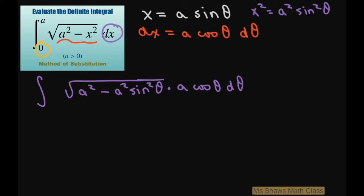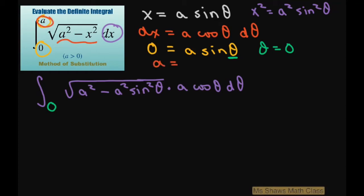Now we have to change our upper and lower limits. When X is zero, we have zero equals A sine of theta, which means theta equals zero, so the lower limit stays the same. When X equals A, we have A equals A sine of theta, so sine of theta equals one, which means theta equals pi divided by two, since sine of pi over two is one.